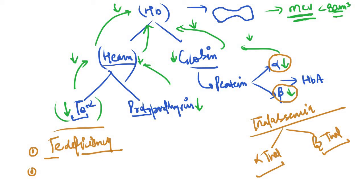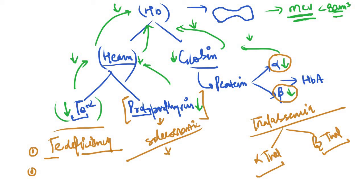If there is a decrease in protoporphyrin — the ring part — there will be a decrease in heme and consequently a decrease in hemoglobin, resulting in decreased MCV. The third condition causing microcytic hypochromic anemia is sideroblastic anemia — a type of anemia in which there is a decrease in the formation of protoporphyrin due to numerous reasons, which I'll cover when I discuss sideroblastic anemia in detail.